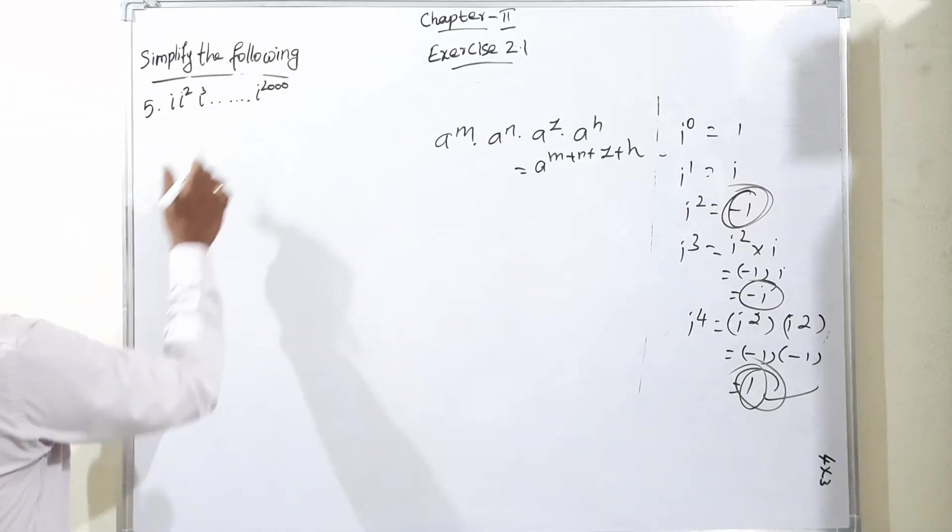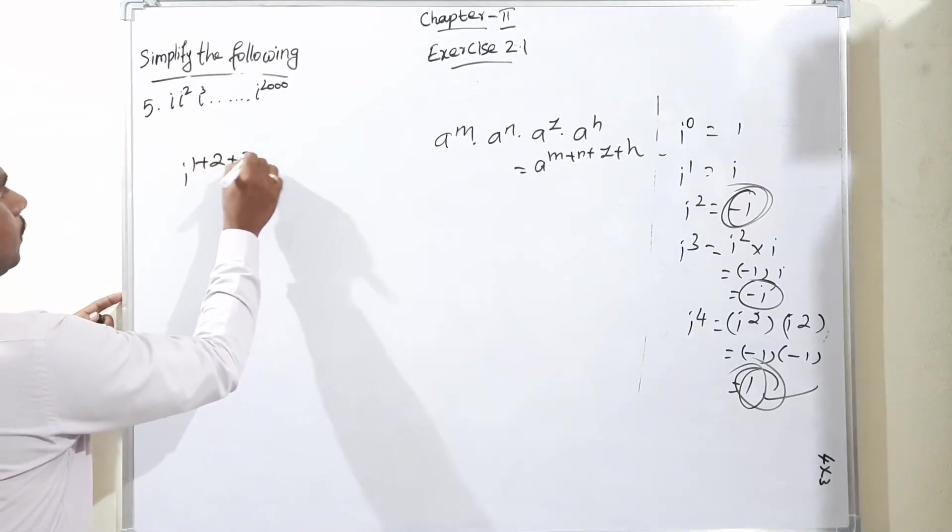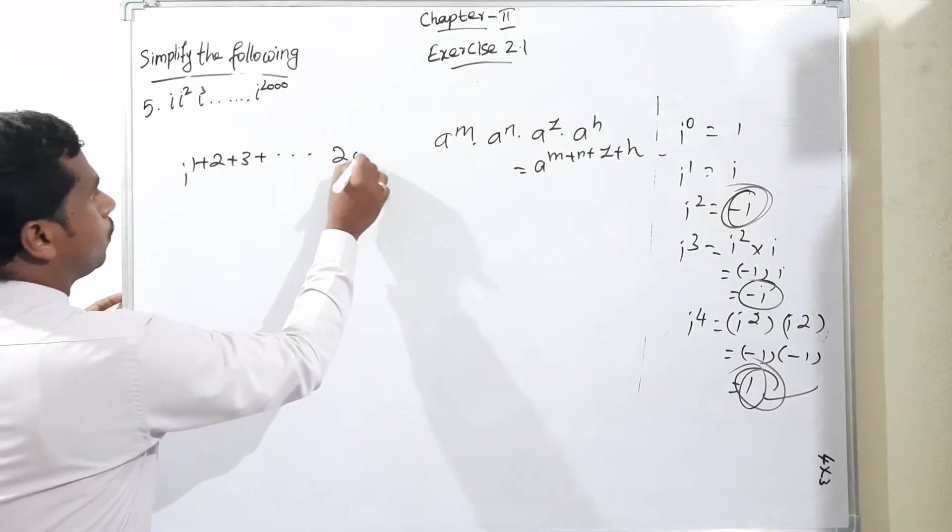So I have to rewrite now i to the power 1 plus 2 plus 3 plus dot dot dot to 2000.